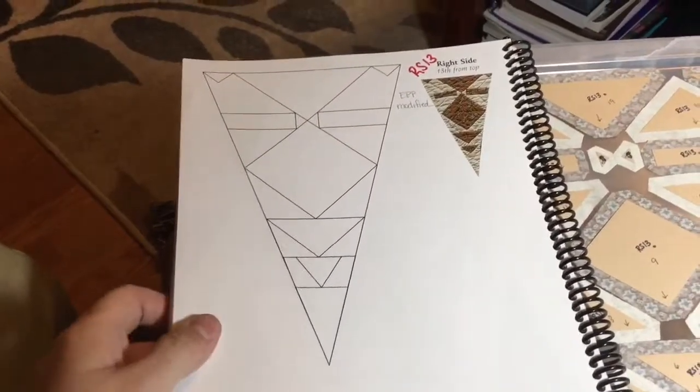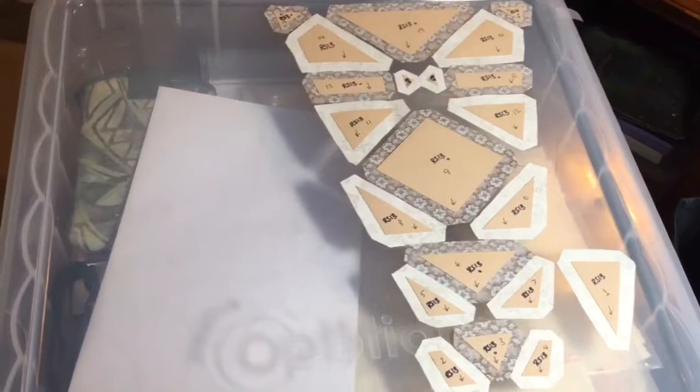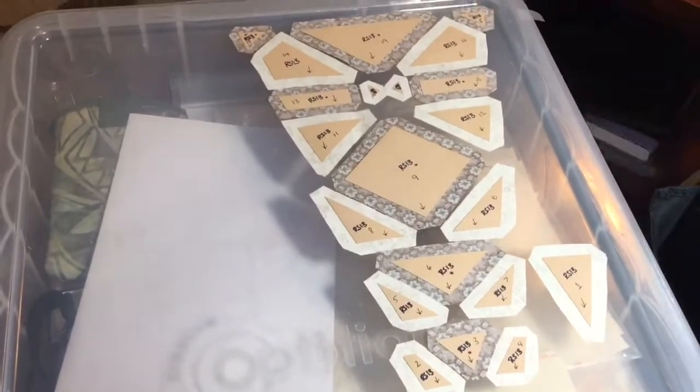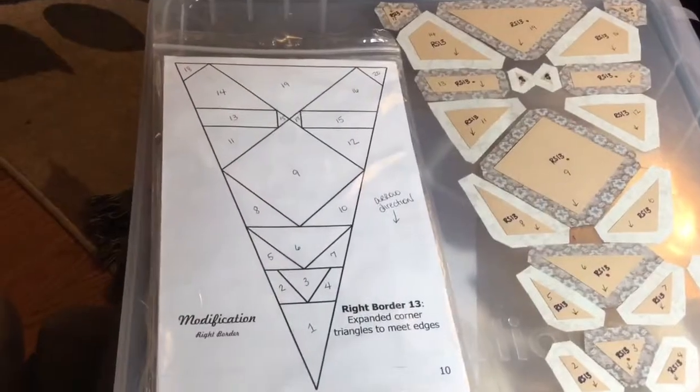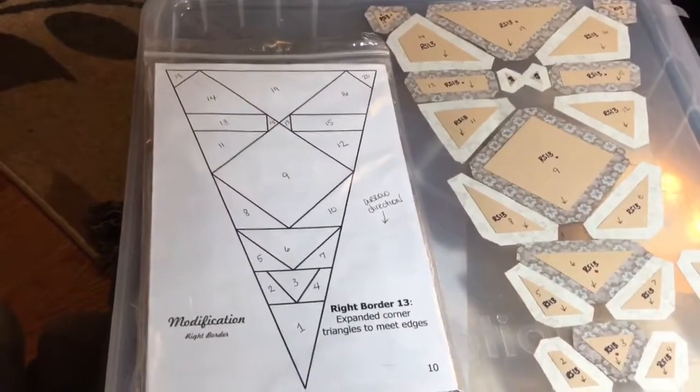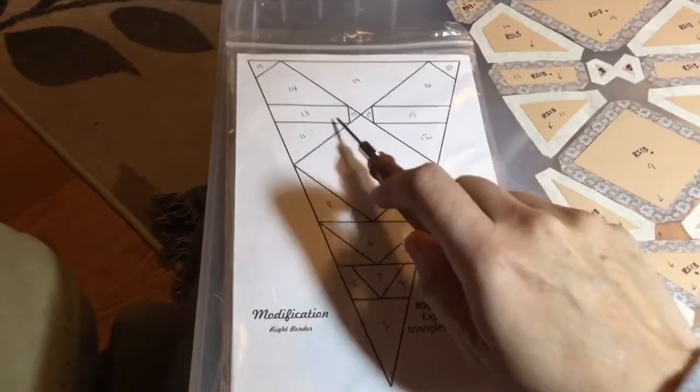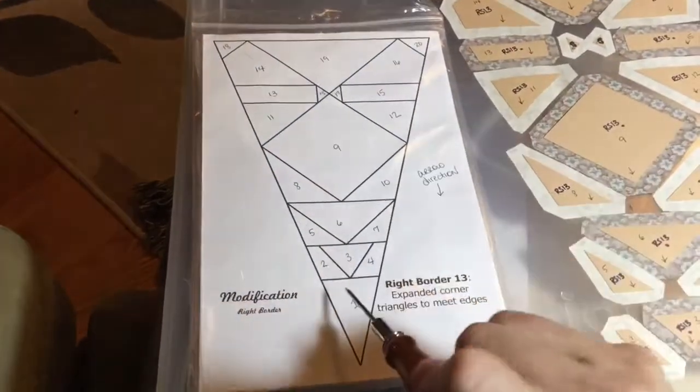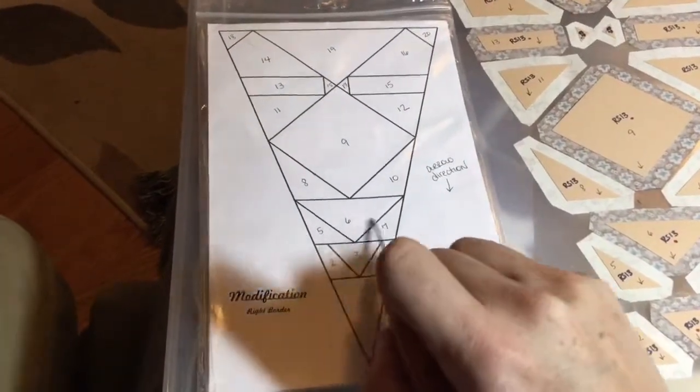So I have my pieces all set up and laid out here, and I've been looking at the assembly of this. There's always 60 ways to do things, especially in quilting, but this creates a little bit of an issue when it comes to this part right here.